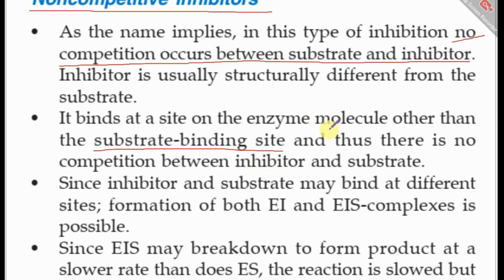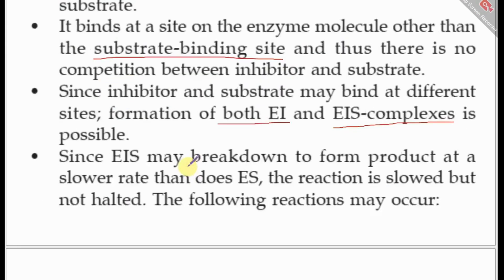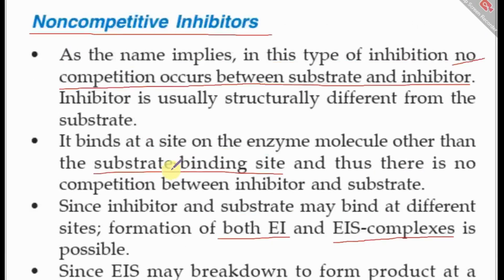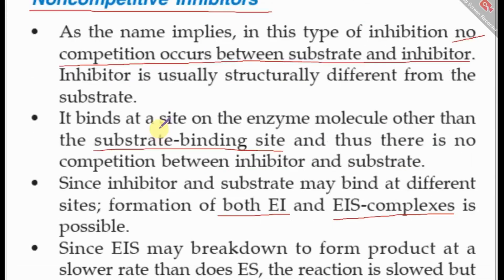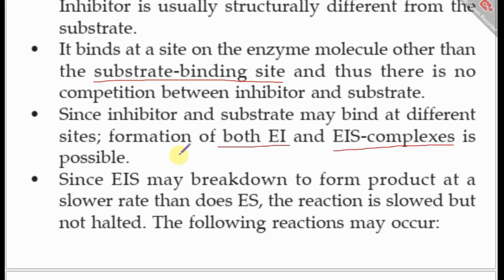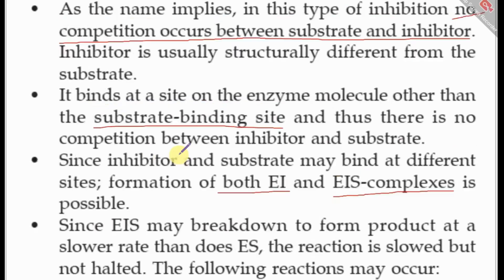Since the inhibitor and the substrate bind at different sites, the formation of both an enzyme-inhibitor complex and an enzyme-inhibitor-substrate complex is possible. The enzyme-inhibitor-substrate complex can still break down to form product, but at a slower rate than the enzyme-substrate complex. Therefore, the reaction is slowed but not halted, and the activity of the enzyme is reduced but not completely blocked.